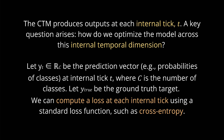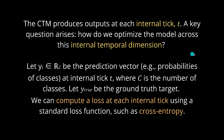This new dimension produces output at each internal 'tick' t. A key question is how to optimize the model across this internal temporal dimension. The prediction vector is a probability over classes at internal tick t, where c is the number of classes. We have a ground truth target and can compute a loss at each internal tick using a standard loss function such as cross-entropy — the same optimization ideas as classical transformer architectures, just accounting for this new temporal dimension.